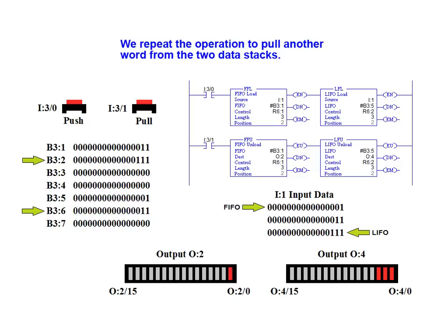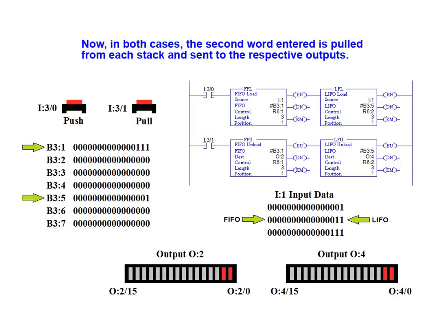We repeat the operation to pull another word from the two data stacks. Now, in both cases, the second word entered is pulled from each stack and sent to the respective outputs.